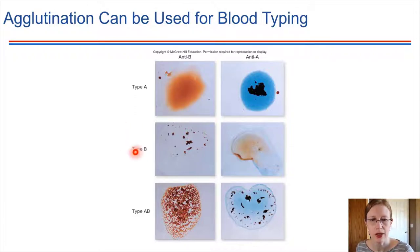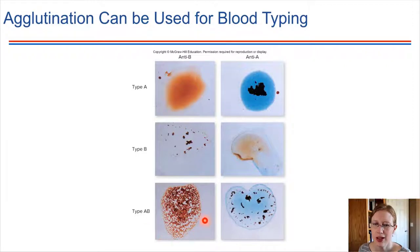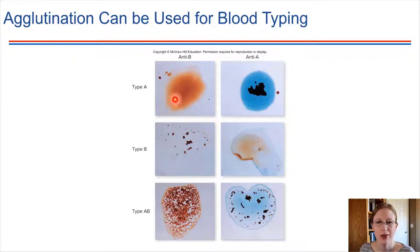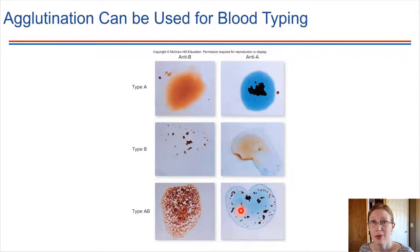Blood type B, we see just the opposite: if you mix blood type B with anti-B antibodies, clumping takes place, agglutination happens, but not with the anti-A antibodies. Blood type AB is interesting because these red blood cells have both A and B antigens present on the surface, so if we mix it with antibodies against the B antigen we're going to have agglutination, and if we mix it with antibodies against the A antigen we're also going to have agglutination — representing the fact that both A and B antigens are present.